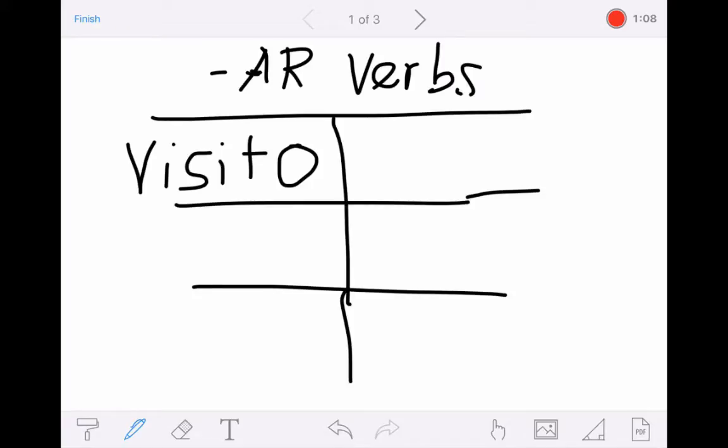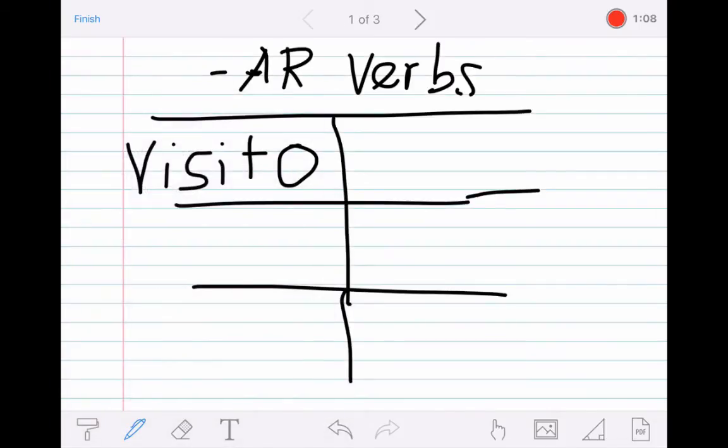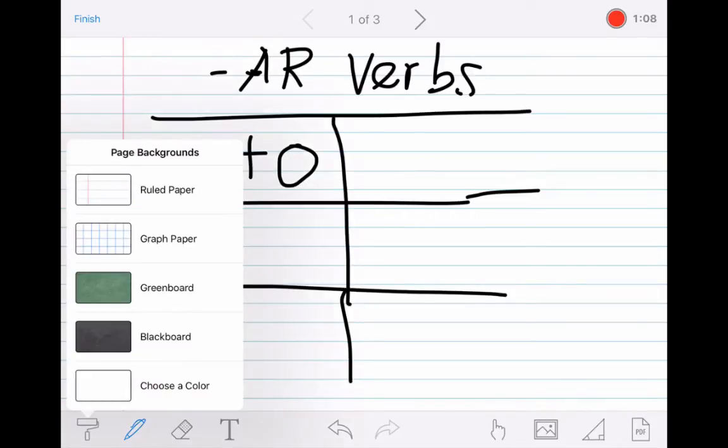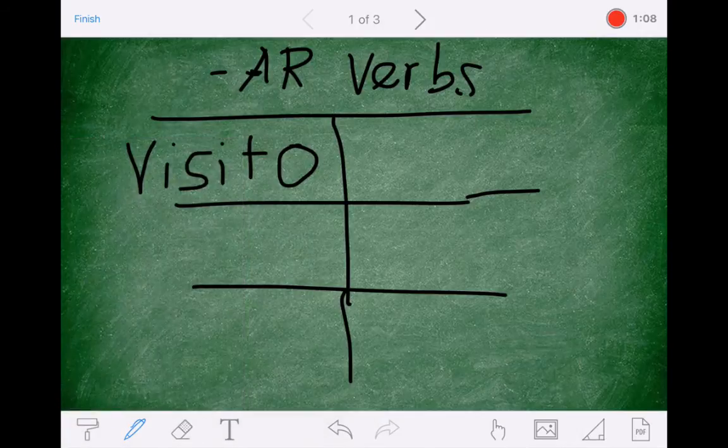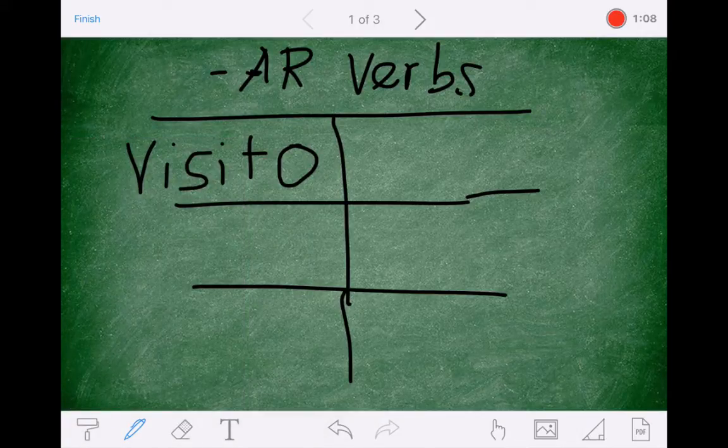In addition to just being able to draw and being able to speak and have it be recorded, notice that there's some other tools that you have on the screen in the app. In the lower left corner, you have what looks like a roller paintbrush. You can tap on that and it gives you backgrounds for your recordings. You can have lined paper, you can have graph paper for math projects and graphing and things.